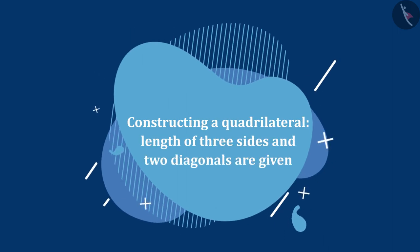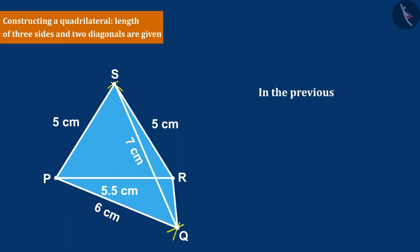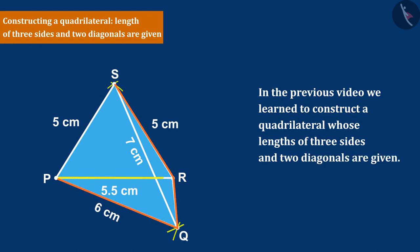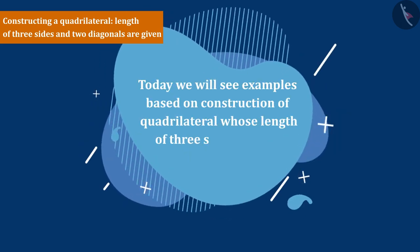Welcome all of you to this video. In the previous video, we learned to construct a quadrilateral whose lengths of three sides and two diagonals are given. Today we will see examples based on the design of quadrilaterals when measurements of three sides and two diagonals of that quadrilateral are given.